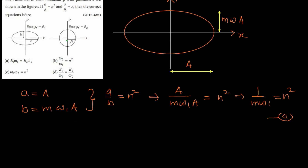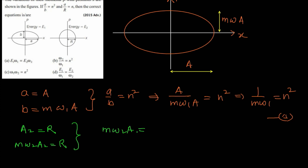For oscillator 2, the amplitude is A₂ = r, and the semi-minor axis length is mω₂A₂ = mω₂r. Since the figure for oscillator 2 shows a circle (semi-major axis = semi-minor axis = r), we have mω₂r = r, which gives mω₂ = 1. This is equation two.